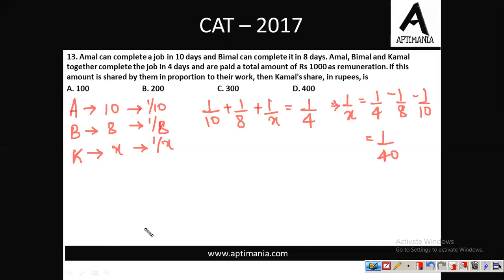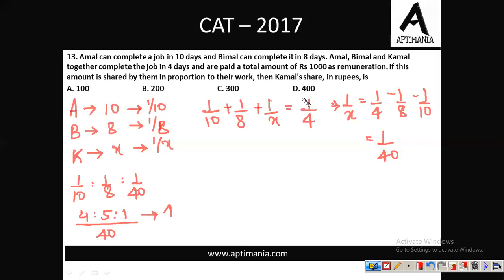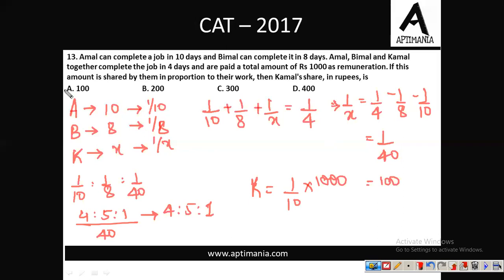A remuneration of Rs. 1000 is to be divided in the ratio of their 1-day work: 1/10, 1/8 and 1/40. Taking LCM as 40, the ratio is 4:5:1. Kamal's share is 1/10 of Rs. 1000 = Rs. 100. The correct answer for question number 13 is Rs. 100, option A.